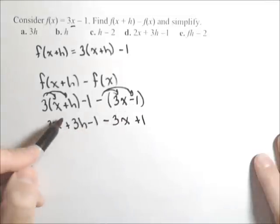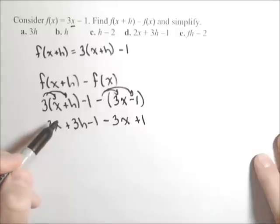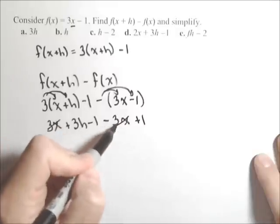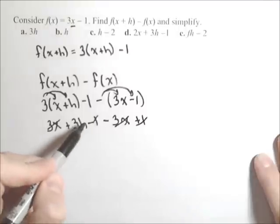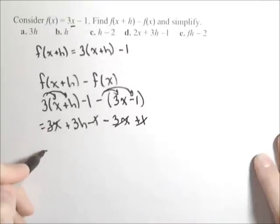We're going to get some canceling. The 3x and the negative 3x will cancel, the negative 1 and the 1 will cancel. And when all is said and done, this simplifies down to 3h.